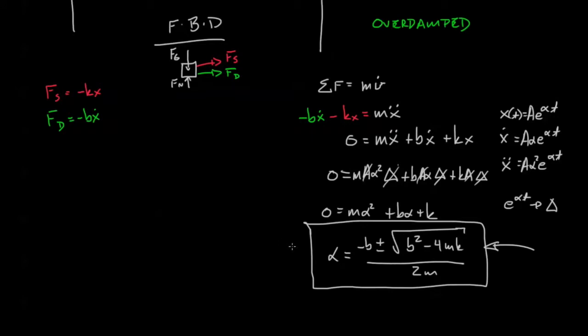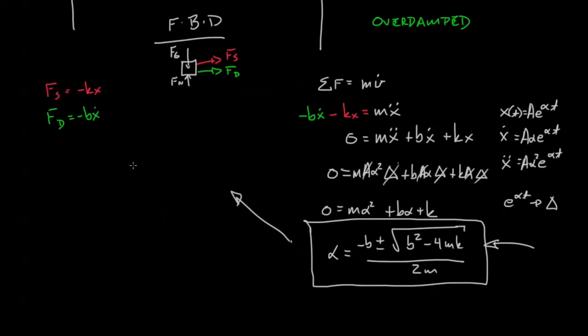Let's first pretend that it's real. So in that case, if the term b² is greater than 4mk then we have a real term in here and if that's the case we're going to have an exponent e^(αt). What does that look like? That looks like our overdamped solution.